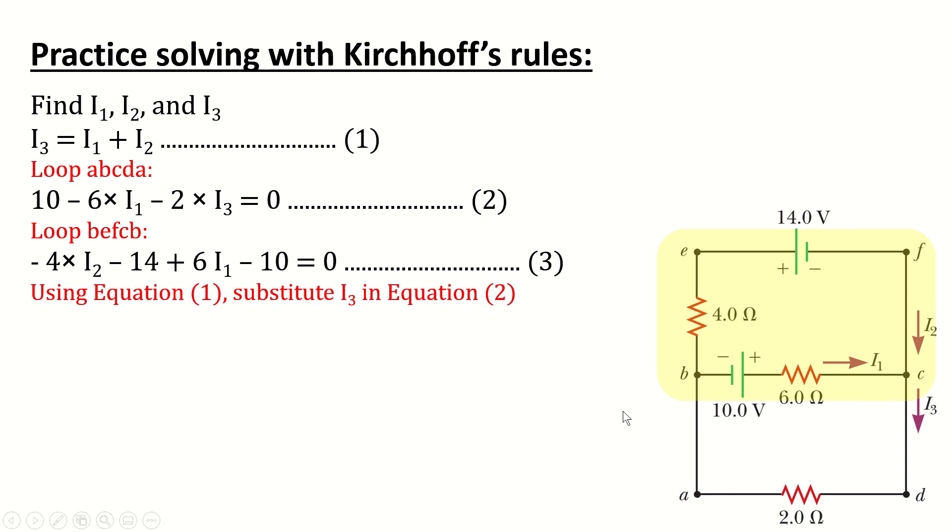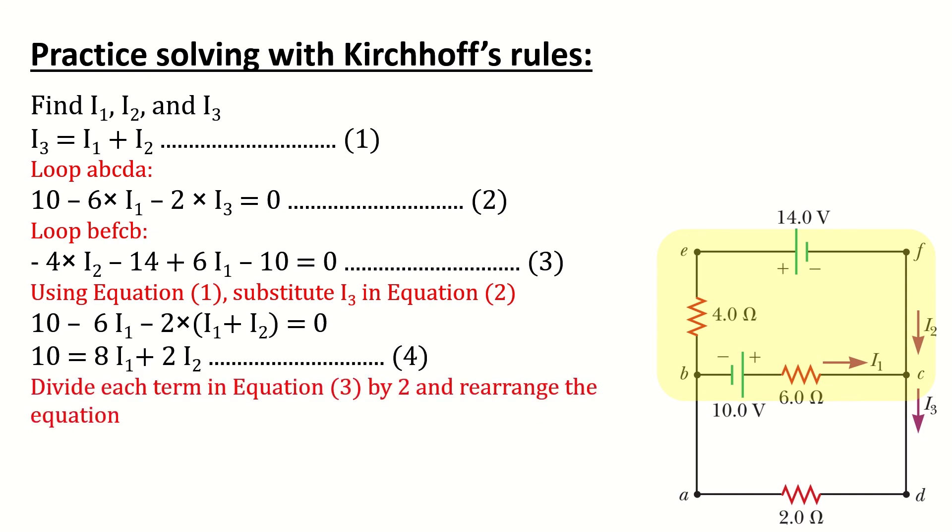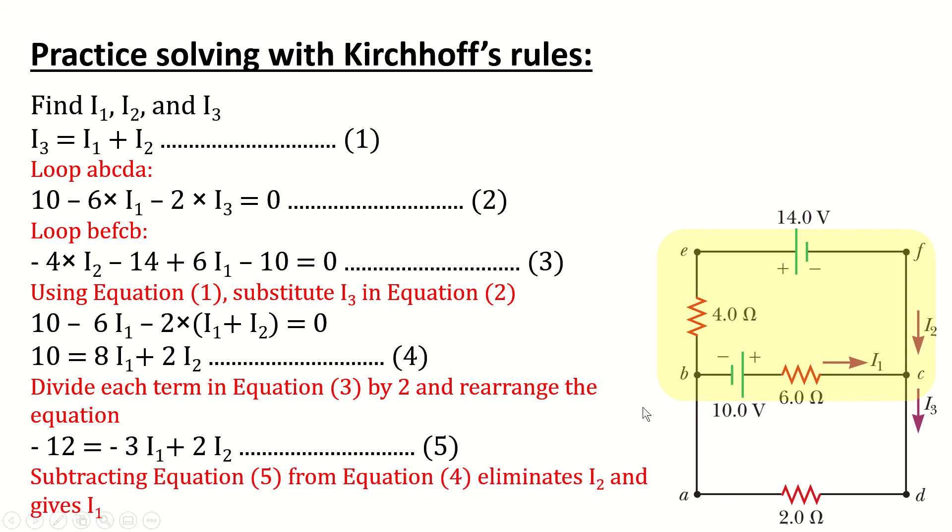Using equation 1, we will simplify it into this form and call it equation 4. Divide each term in equation 3 by 2 and rearrange the equation, it gives equation 5. Subtracting equation 5 from equation 4 eliminates I2 and gives I1.